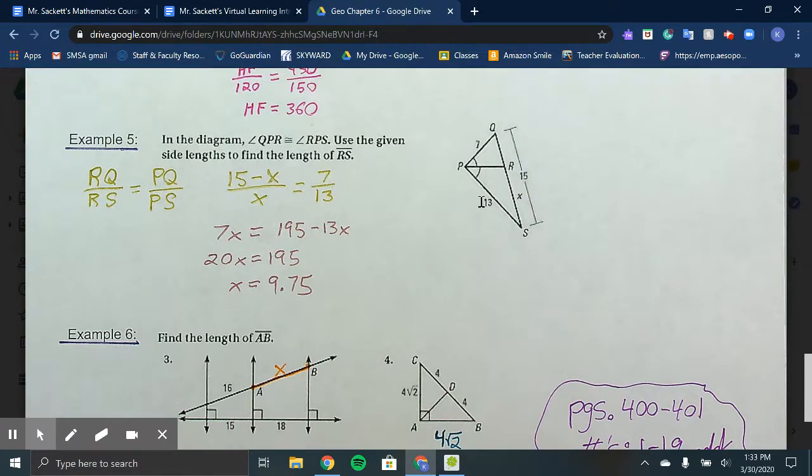Now we have to go into a little algebra. Once our proportion's set up for cross multiply divide, 7 times X is 7X. For 15 minus X times 13, you have to use the distributive property. 13 times 15 is 195, minus 13X. Add the 13X to each side, 20X equals 195. Divide each side by 20, and X equals 9.75.